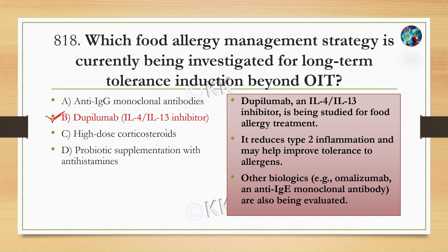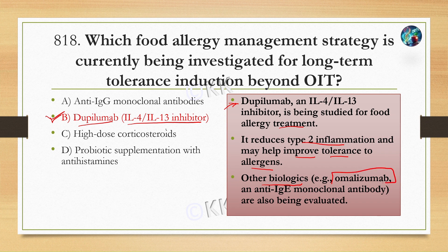Dupilumab is a monoclonal antibody that acts as an interleukin-4 and interleukin-13 inhibitor. It is generally known for reducing type 2 inflammation and may help in improving tolerance to allergens. Other biologics like omalizumab, which is an anti-IgE monoclonal antibody, are also used in research and in serious cases.